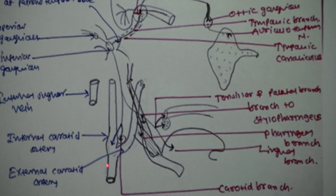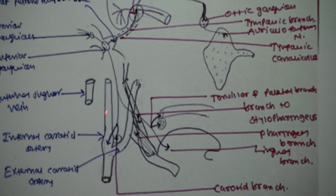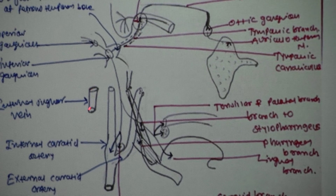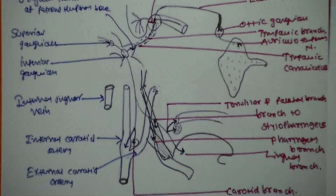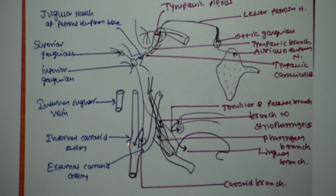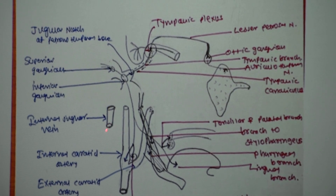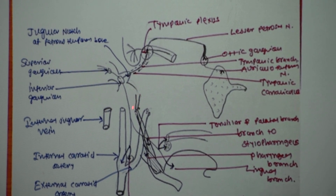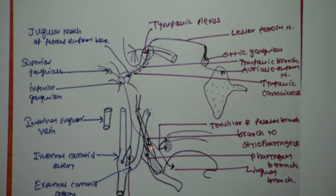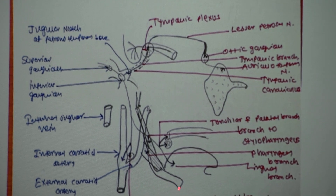This is the important blood vessel in the neck — the common carotid artery, internal carotid, and external carotid artery. This is the internal jugular vein. This is the styloid process, the styloid muscle, and the middle constrictor muscle which is attached to part of the hyoid bone.